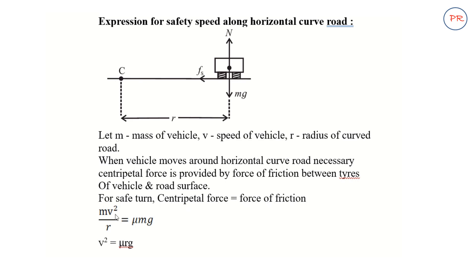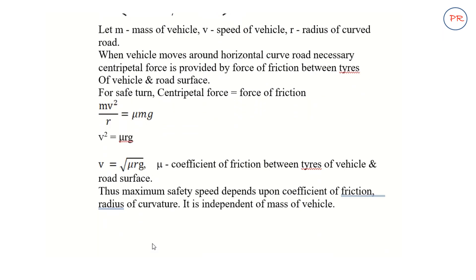Therefore, mv squared upon r must be equal to mu mg. The m terms cancel, and we get v squared equals mu rg. On taking the square root,